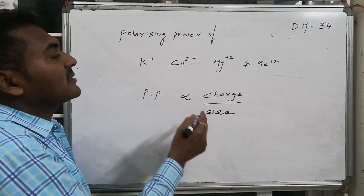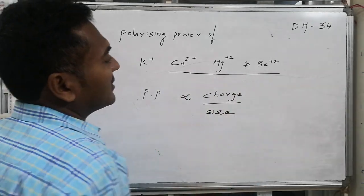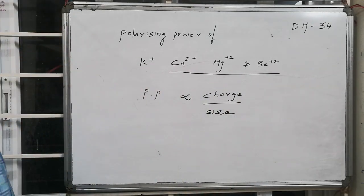In between these, these three are having two units of positive charge, whereas this is having unit positive charge.